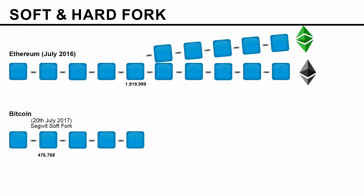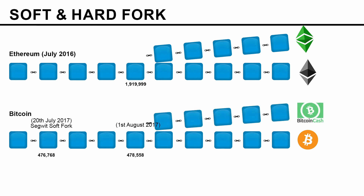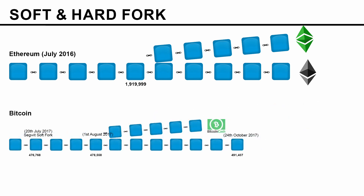Those against Segregated Witness proposed increasing the block size to 8 megabytes. So on 1st August, at block number 478,558, Bitcoin continued on its original chain, but some people switched to Bitcoin Cash, where the block size is increased to 8 megabytes, while Bitcoin's block size remains the same. Hence a hard fork occurred.